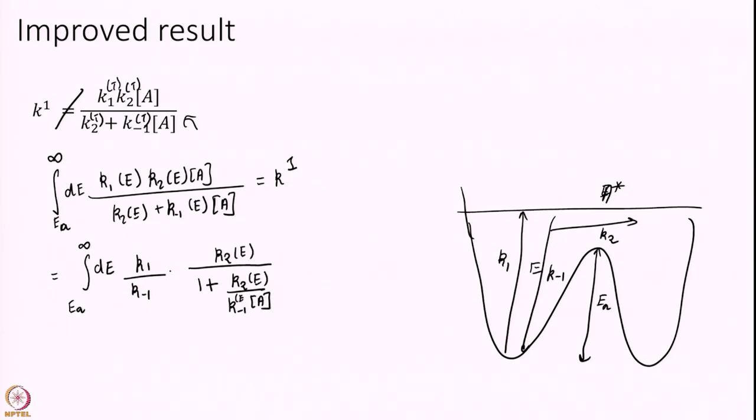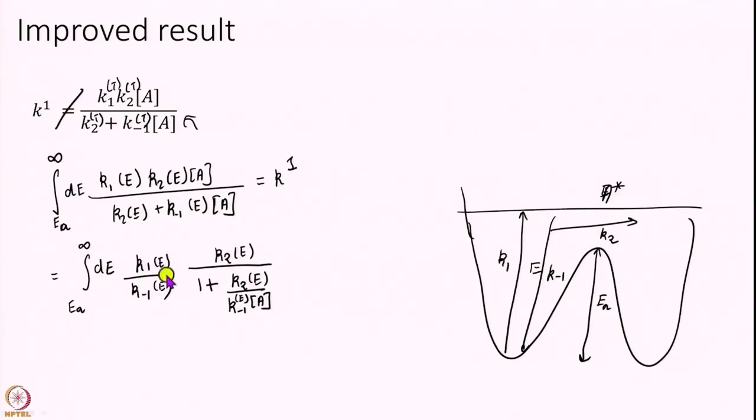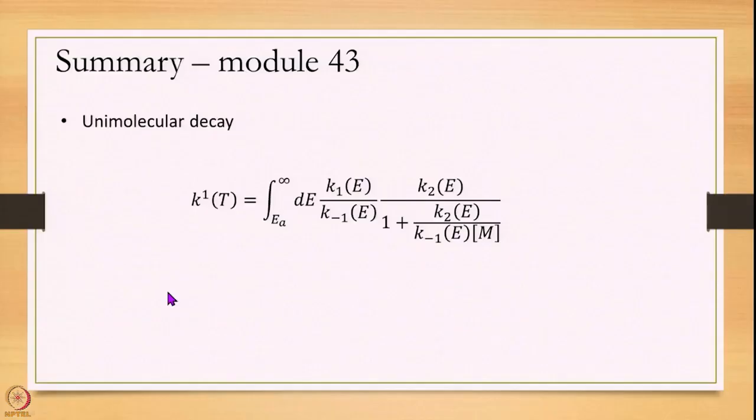That is our new novel idea. This is what RRK did. We discussed this RRK theory earlier: Rice, Ramsburger, and Kassel, and that was their major breakthrough. They said you know, you have been calculating these numbers as a function of temperature, but that is not correct. You should be calculating them as a function of energy and integrating over all possible energies. I will massage this a little bit to get into a form that is better to understand. I will divide both numerator and denominator by K1[A], sorry, K-1[A]. I will get K1/K-1 times K2 divided by 1 plus K2/K-1. And all these things are function of energy.